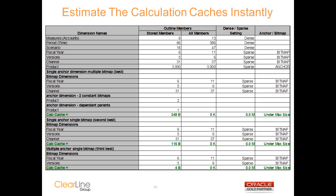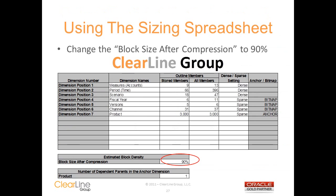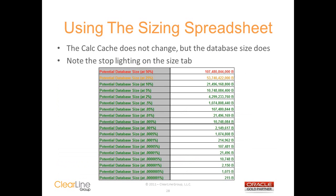You can already see the value of this tool during requirements and design — it will let you do a lot of what-if analysis on your application before you even build it, improving your decision-making process for the design and helping you set appropriate expectations with the business. Now we can demonstrate some of the what-if ability. The first thing we'll do is change our block size after compression from 30 to 90%. You can see that this did not have any impact on the calc cache, but it did increase the size of the database. You're creating the exact same number of data blocks, but the data block size is larger after compression and will take up more disk space.